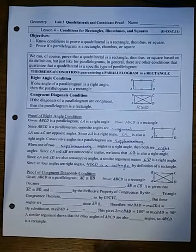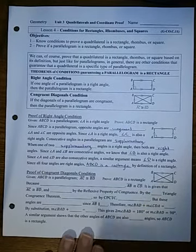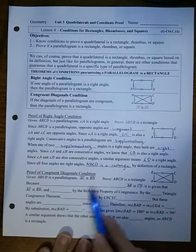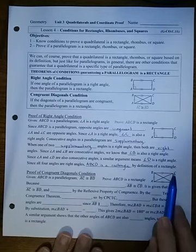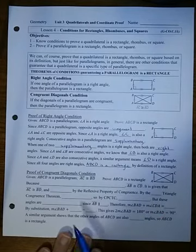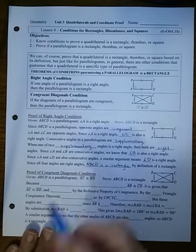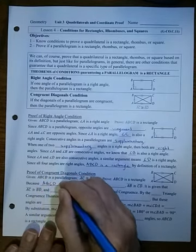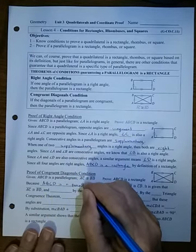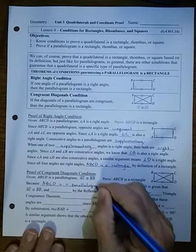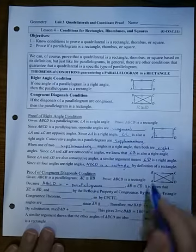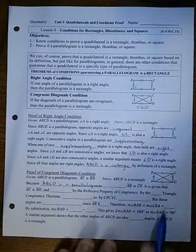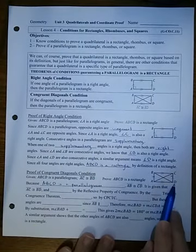Now let's show that having congruent diagonals for a parallelogram is enough to show that it's a rectangle. Since ABCD is a parallelogram, the opposite sides are congruent — so AB is congruent to CD. It is given that the diagonals are congruent.